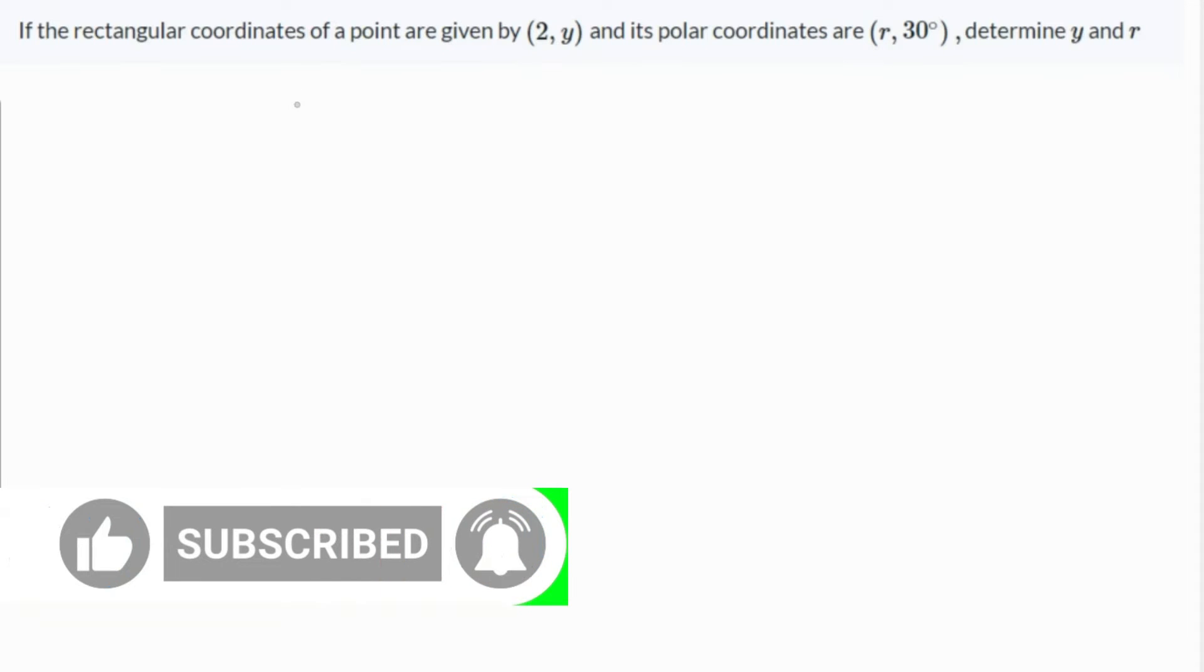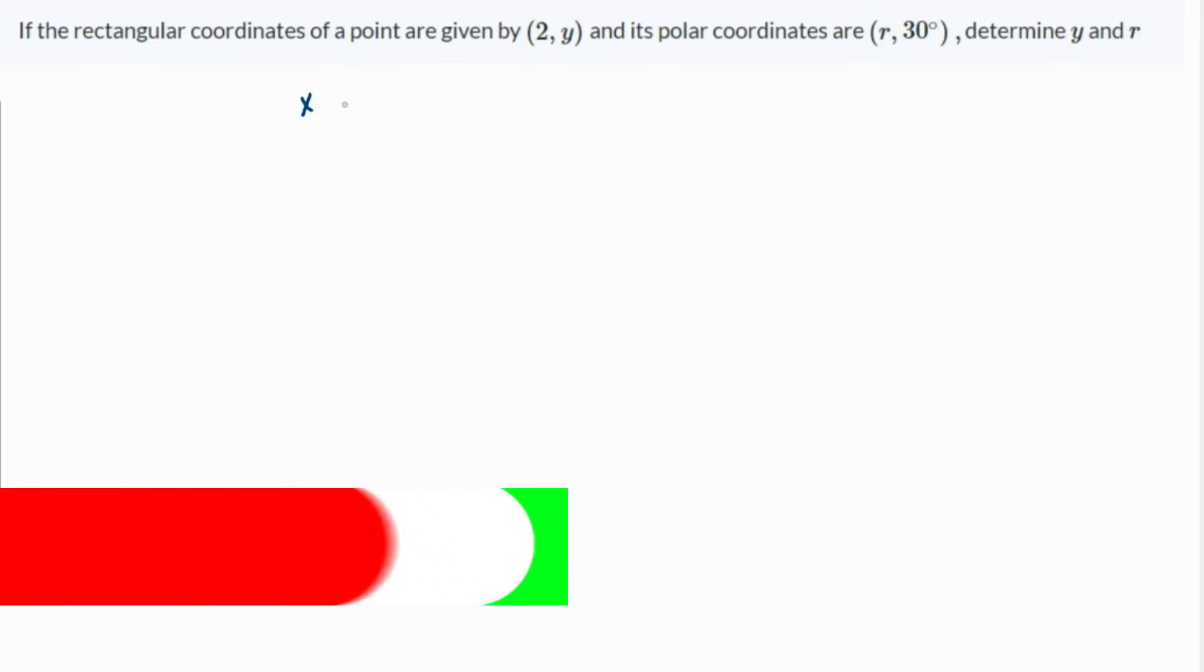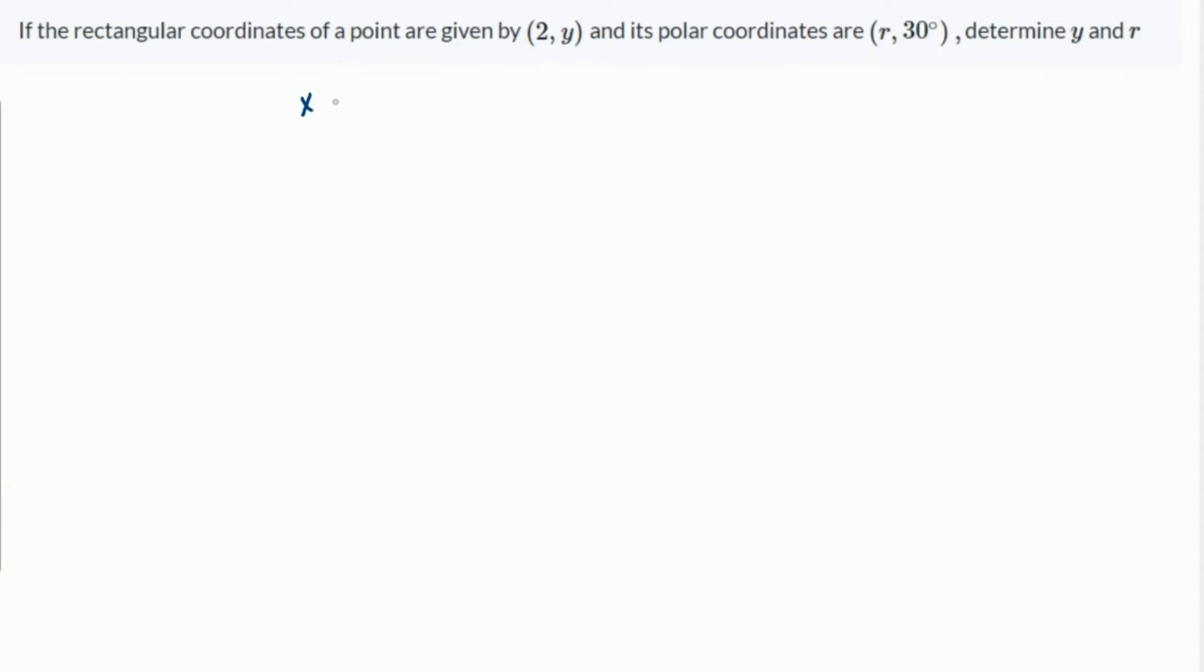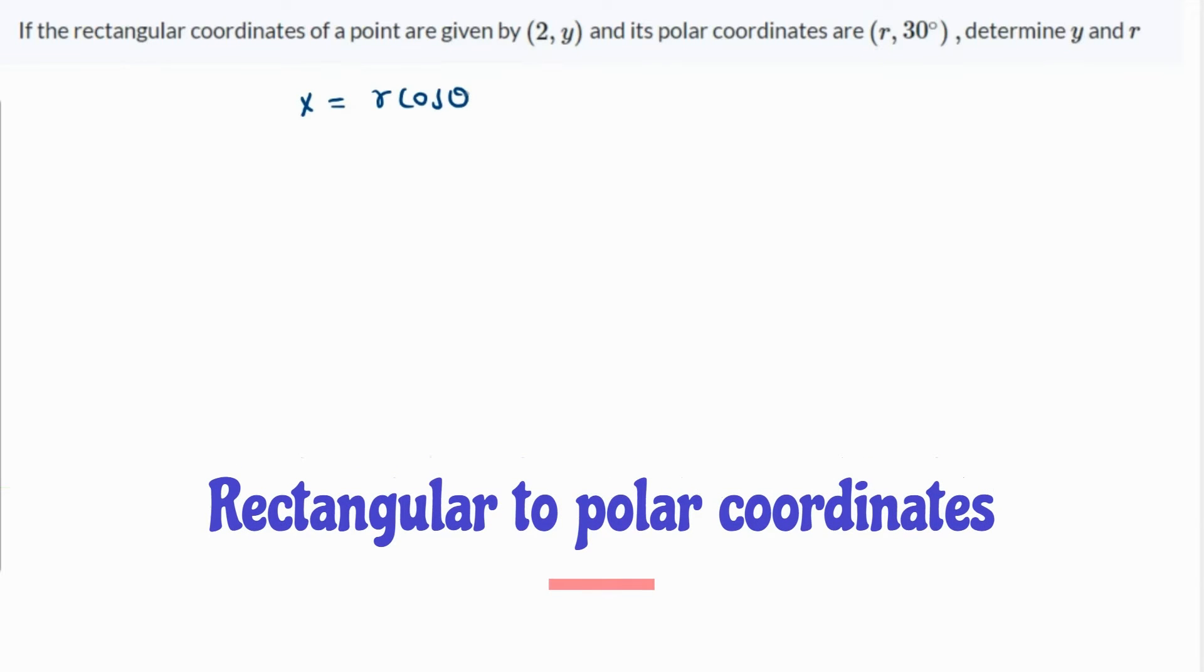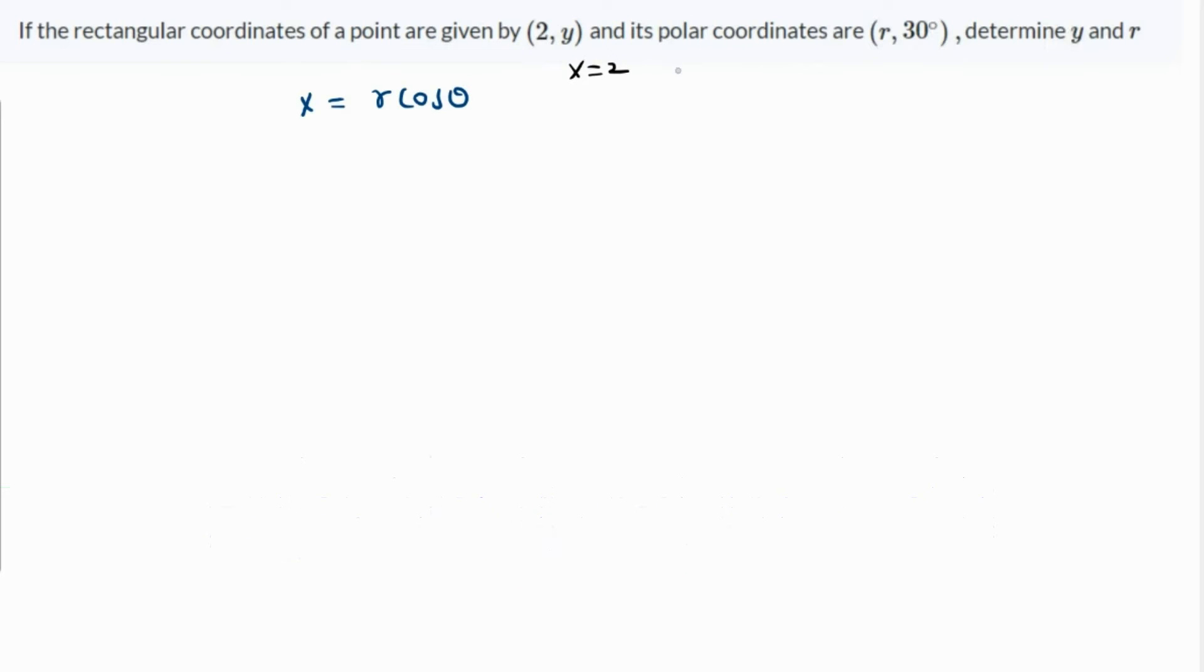We know the relationship that the rectangular coordinate x of a point is given by r cos θ. First, let's write what is given to us: the x coordinate is 2 and θ is 30 degrees.